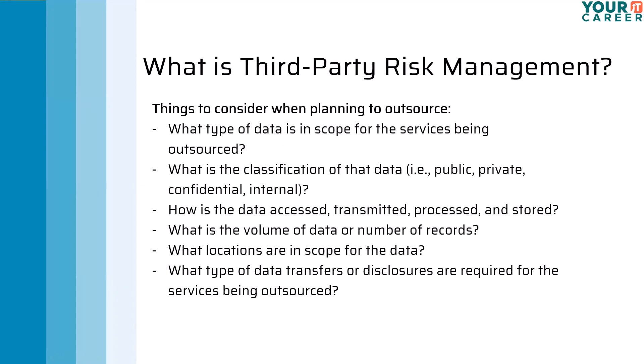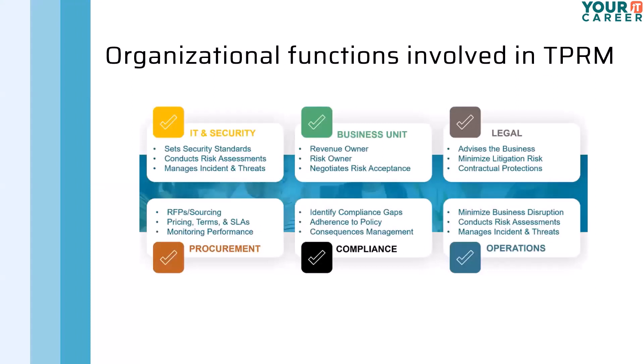Now let's talk about the organizational functions involved in third-party risk management. It's not just an IT function. At a minimum, at least six groups within a company are involved. IT is involved because they need to set security standards, perform assessments, and manage any threats or incidents that arise as part of that third-party relationship.